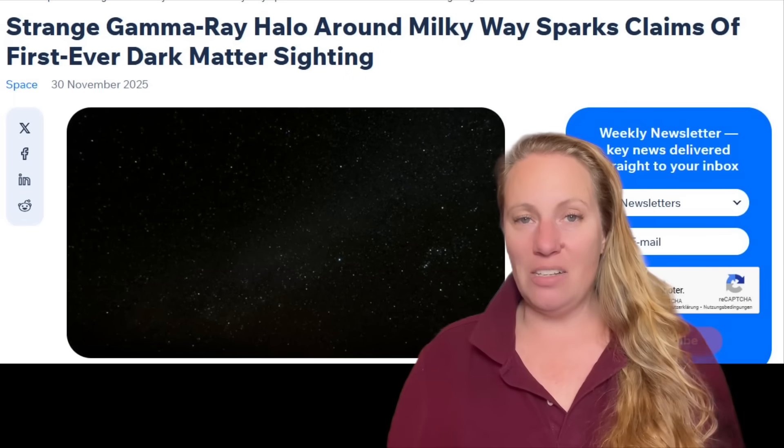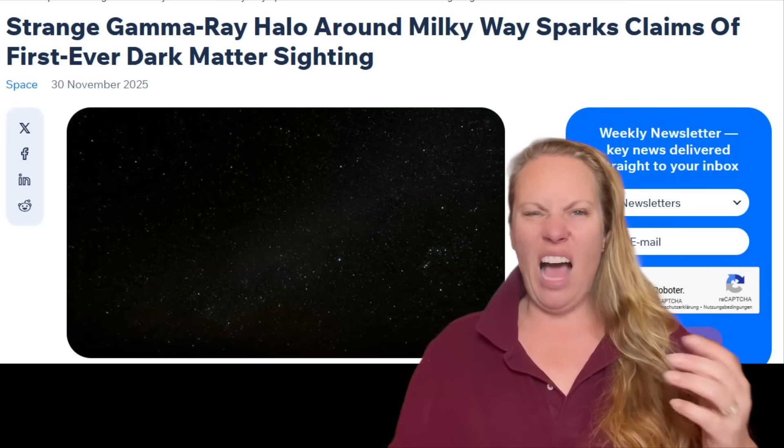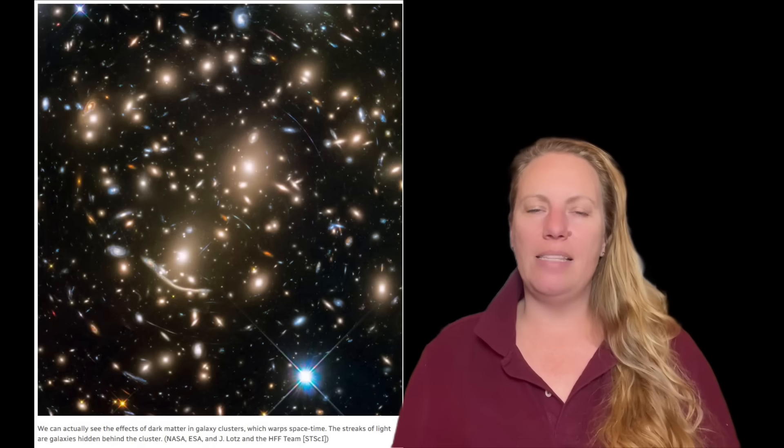Because that is exactly the energy that scientists expect when dark matter particles destroy each other. Yeah, the stuff that we don't see is fighting with each other. And this process is called annihilation. How can we capture this with our minds? Two dark matter particles collide, and then they vanish, and they release gamma rays while they do that.